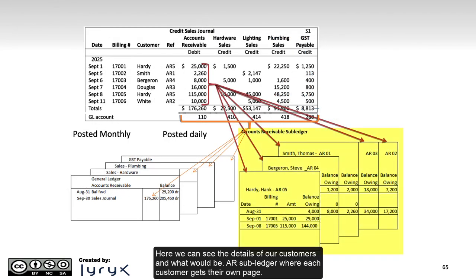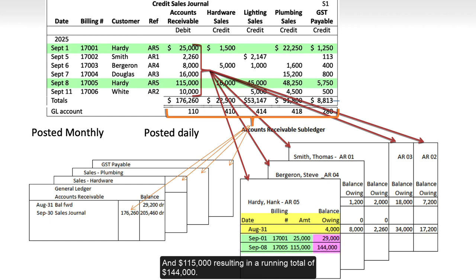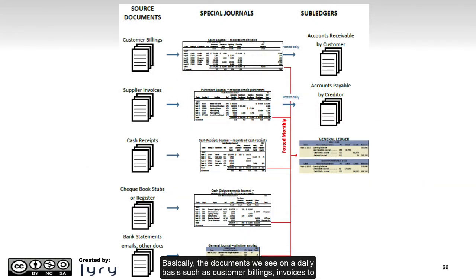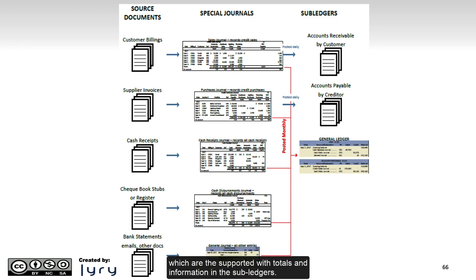Here we can see the details of our customers in what would be the AR sub-ledger, where each customer gets their own page. Hardy started the month with a balance owing of $4,000, and there were two sales during the month on the first and eighth for $25,000 and $115,000, resulting in a running total of $144,000. Basically, the documents we see on a daily basis — such as customer billings, invoices to suppliers, cash receipts, etc. — are the source for transactions entered into the special journals, which are then supported with totals and information in the sub-ledgers.